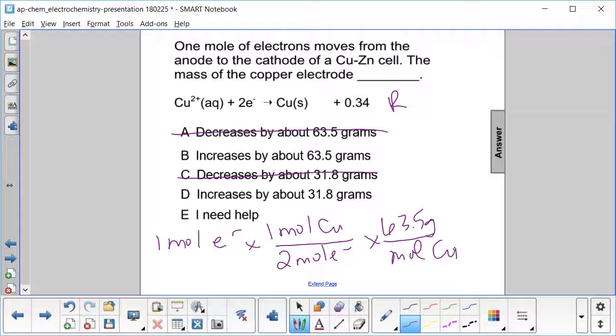Okay, and then 63.5 over 2 is about 31.75 or 31.8. So we get 31.8 grams here, which is D.